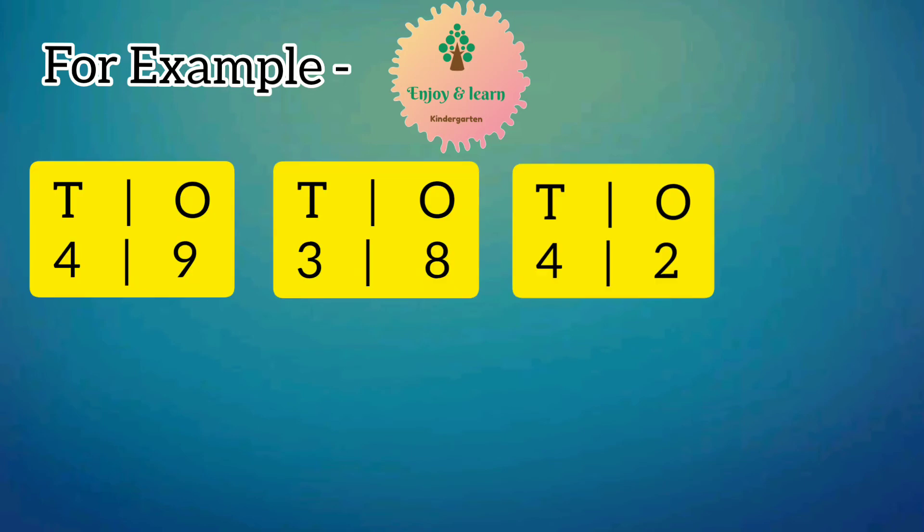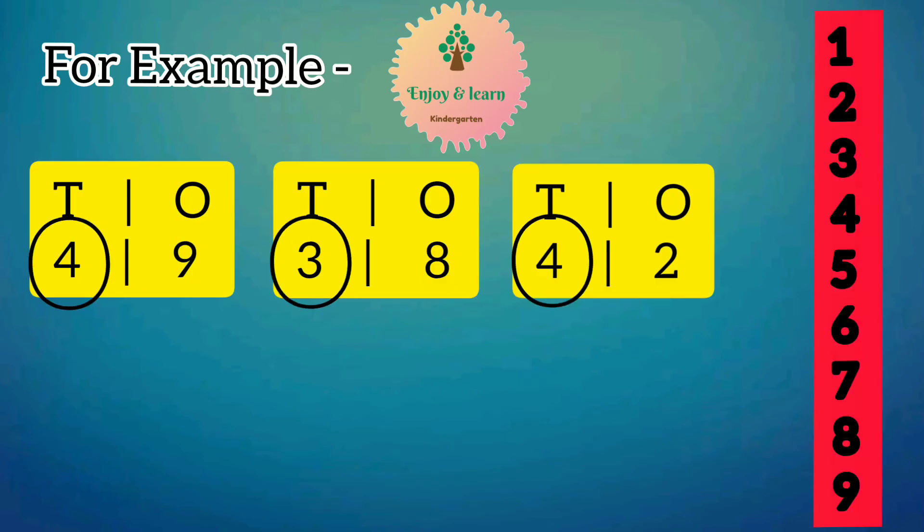Now let us move on with different numbers at tens place. These numbers have to be arranged in decreasing order, that means from greatest to smallest. At tens place we have 4, 3, and 4.